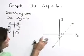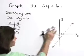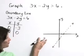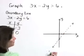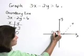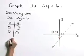Next, we need to determine which side of this line to shade to represent our solution region. Choose a point that is clearly off the boundary line, such as the origin, and use it as a test point.